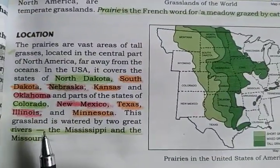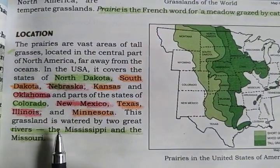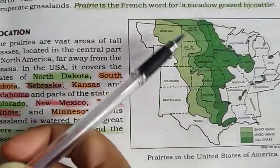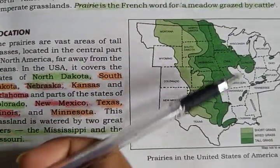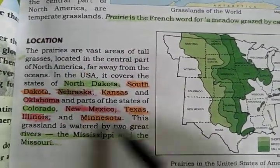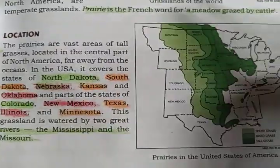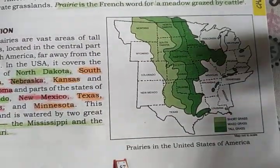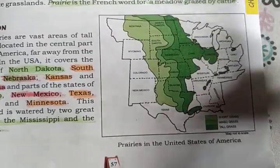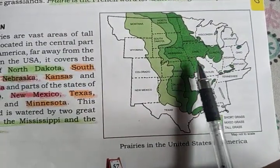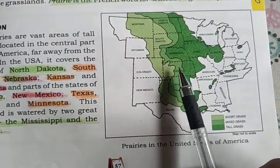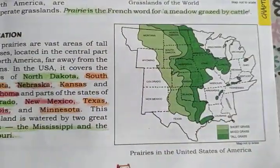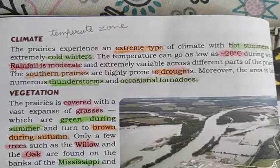There are two important rivers, Mississippi and Missouri, which provide water to these grasslands. The grassland is located in the United States of America, and this map also shows that there are long grasses, medium-sized grasses, and the shortest grasses.